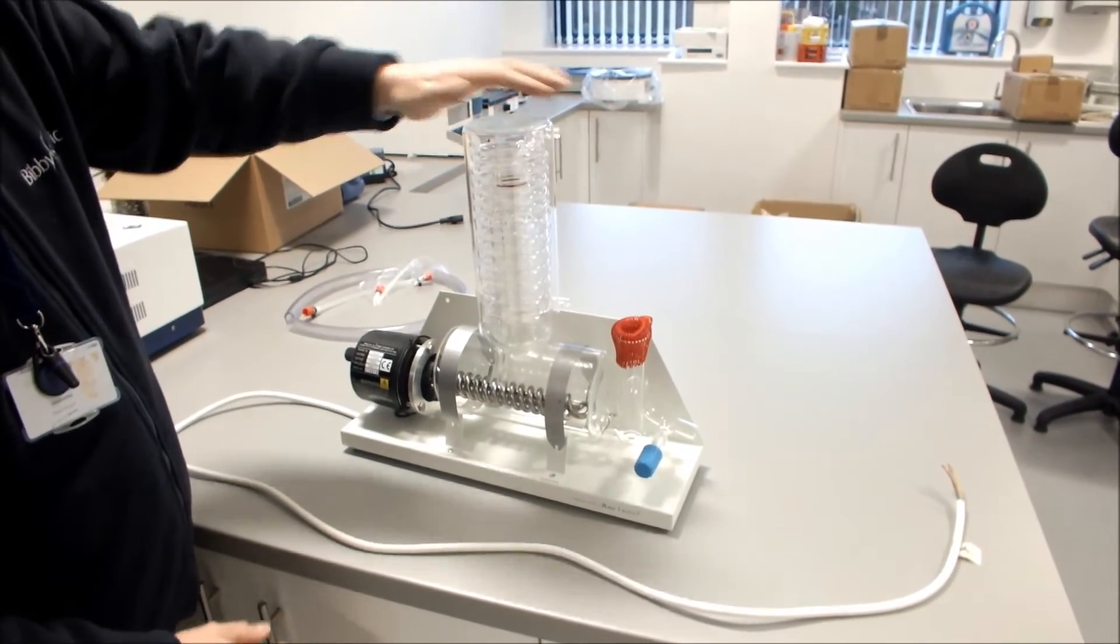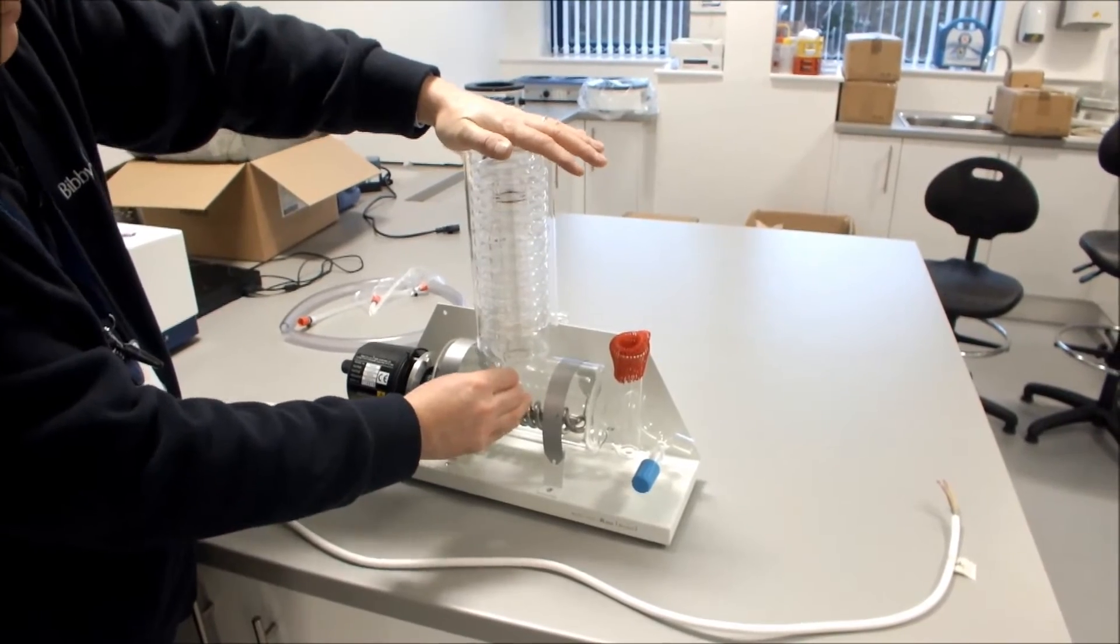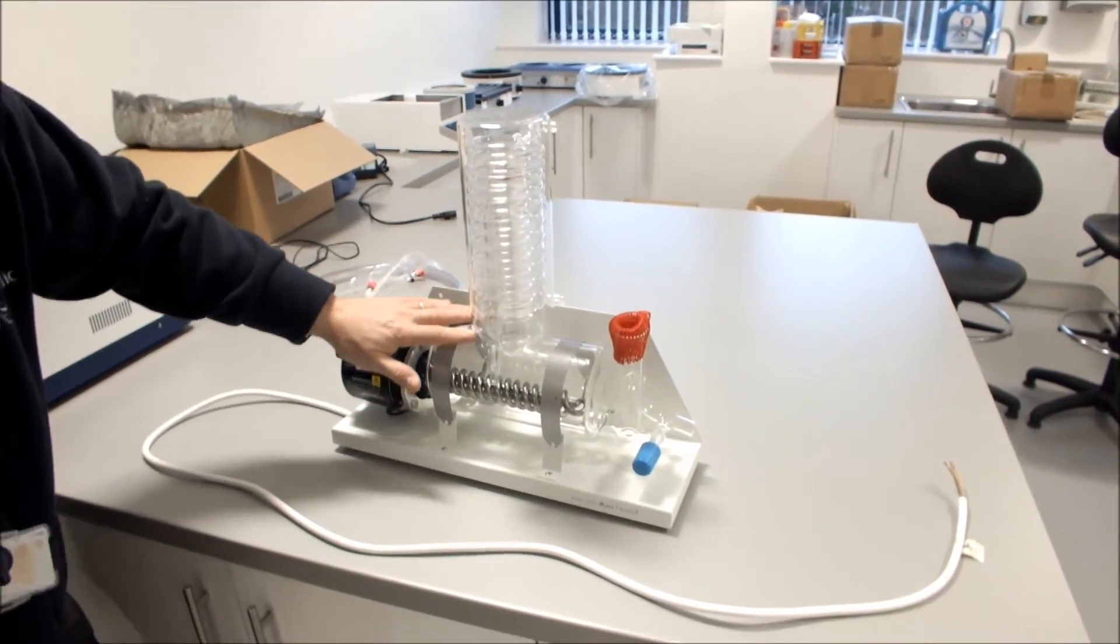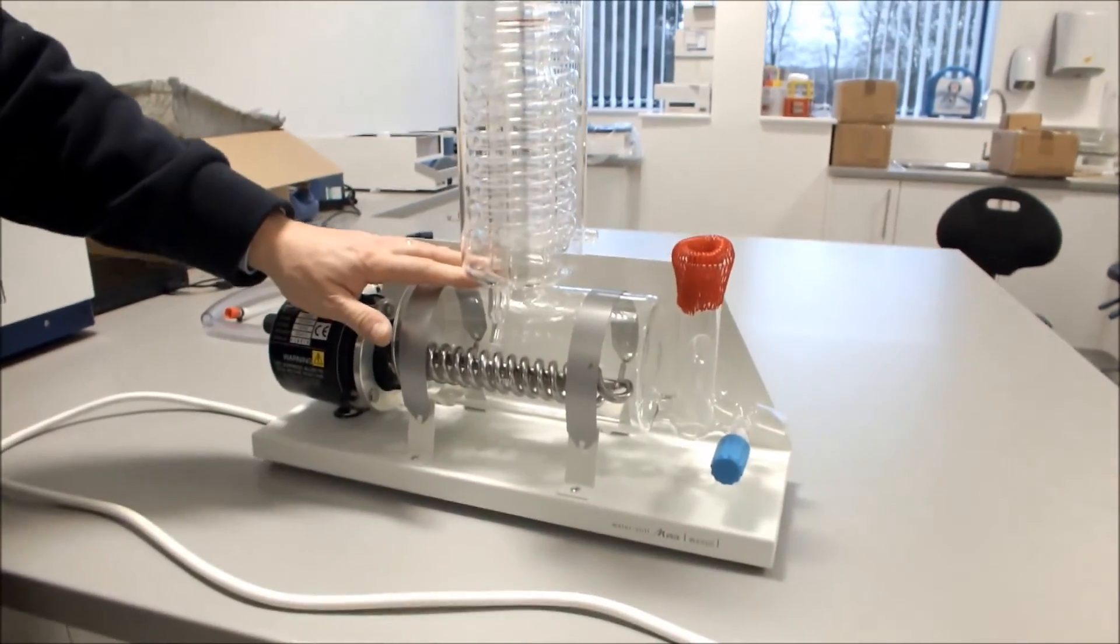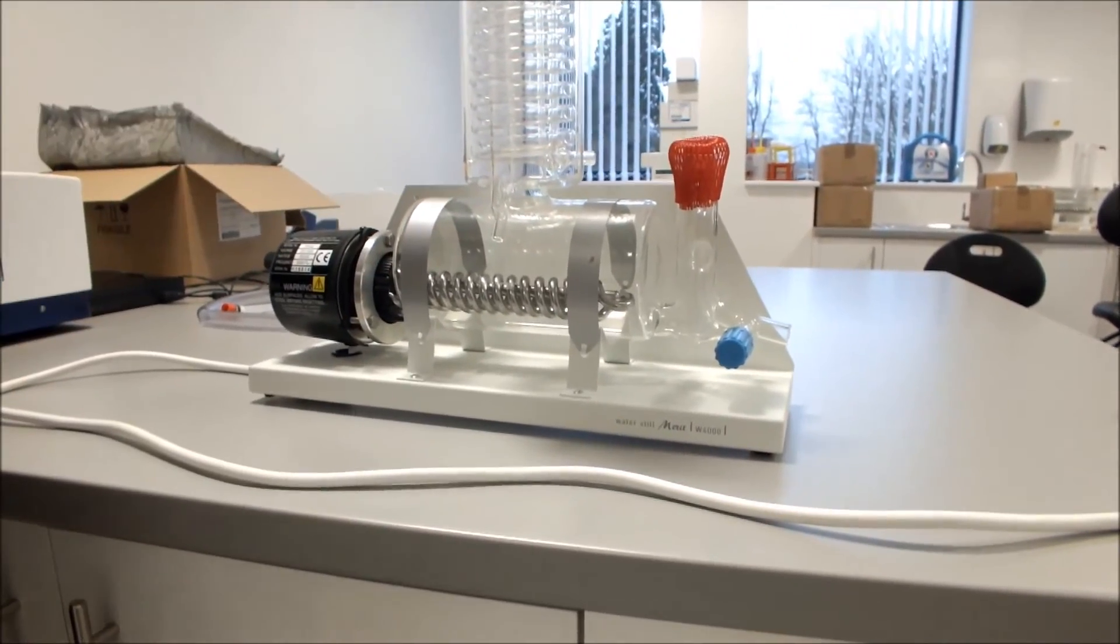Place your condenser on the vapor tube like so. When you feel some resistance, press down slightly, just to create a seal. And you should have a 5 to 10mm gap between the bottom of the condenser and the top of the boiler.